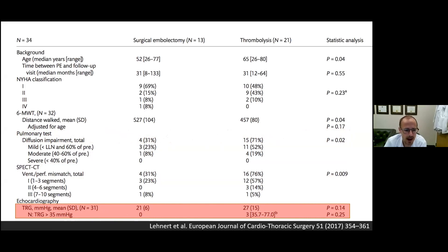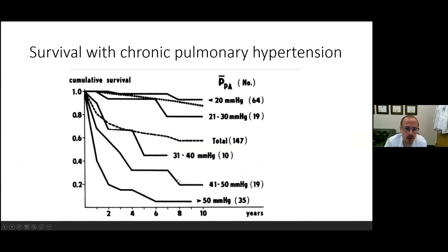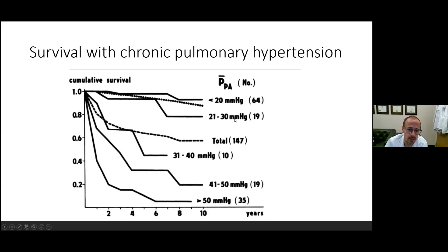Very importantly, the number of patients with residual pulmonary hypertension is about half in those who underwent a surgical approach versus thrombolytics. This matters when you consider the impact of chronic pulmonary hypertension on survival. Looking at CTEPH data — chronic thromboembolic pulmonary hypertension — as soon as PA pressures are above 30, long-term survival dramatically drops off, and with PA pressures above 40, ten-year survival is in the 20 percent range.